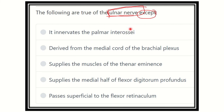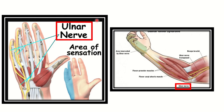Here we can see this is the ulnar nerve. The ulnar nerve supplies the medial one and half fingers in the hand — you can see this is the area of sensation, the medial one and half fingers. In the second picture we can see the ulnar nerve passes between the flexor carpi ulnaris and flexor digitorum profundus.